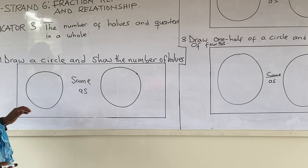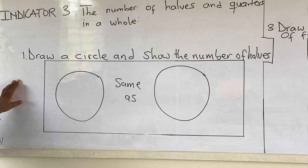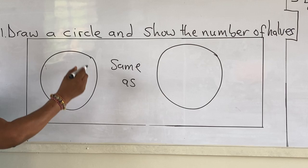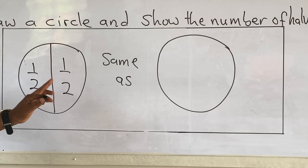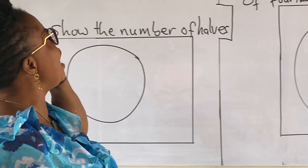Now, let's move to the board. Let's look at example one. We have to draw a circle and show the number of halves. When this circle is equally divided into two, it is the same as one whole. Two halves is the same as one whole.